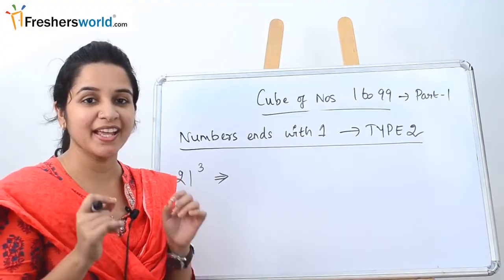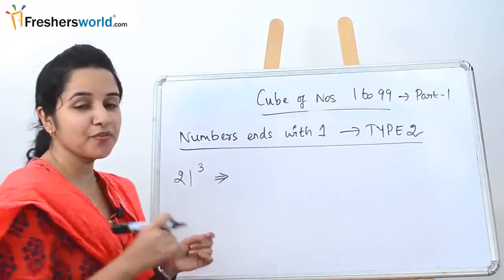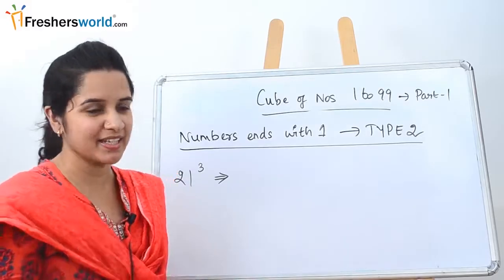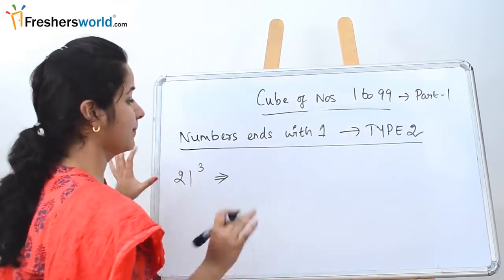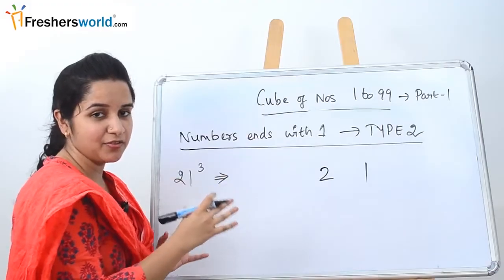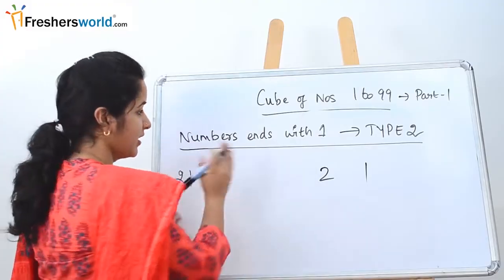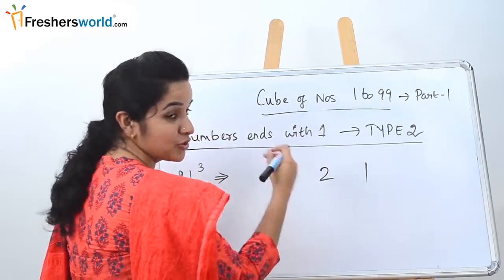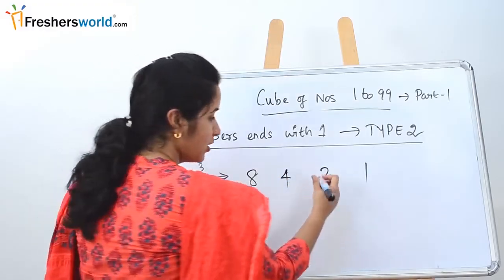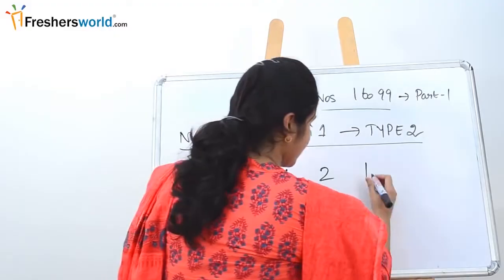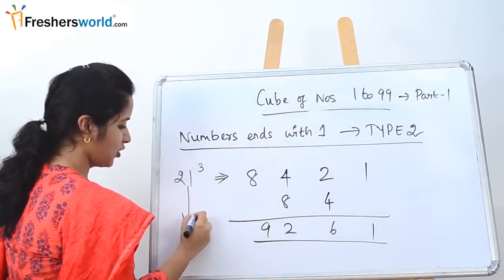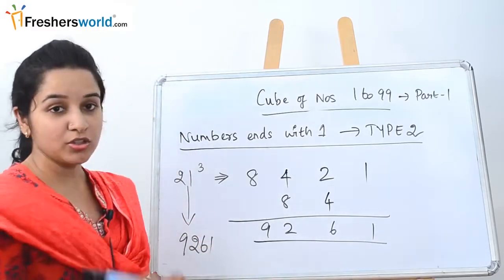Type 2 is numbers that end with 1. We use a similar technique with a slight change. For 21 cubed, write 21 at the end this time — the opposite of Type 1. Then: 2 squared is 4, 2 cubed is 8. Multiply the middle digits by 2: 2×2=4, 4×2=8. Add them up to get 9, 2, 6, 1 — so 21 cubed is 9261.